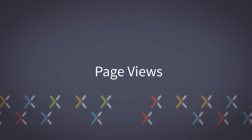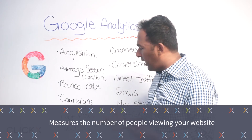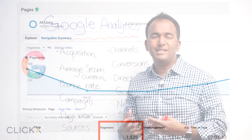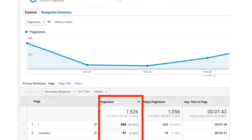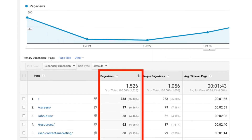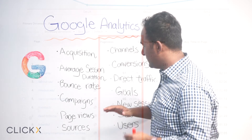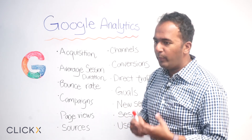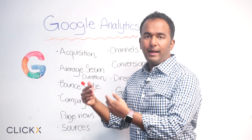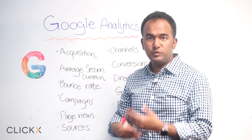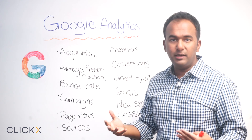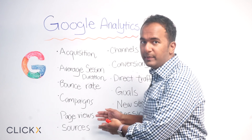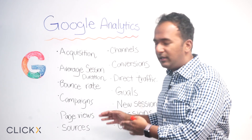Page views are really simple — it's measuring the number of pages somebody's viewing on your website. If you wanted to use page views as a means to measure a goal, you can set something up like tracking people who visit five pages and set that as a goal. If your goal is to get people to visit a certain number of pages — maybe 20 is a really good number — you can set that up as a goal. It's just what it sounds like: page views, nothing complicated.